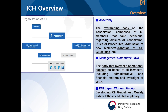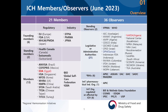Korea is involved in many different expert working groups. If you look at the ICH members, there are 22 member countries, and also the ICH has 36 observers. As you can see here, there are regulatory members, but at the same time there are industry members.